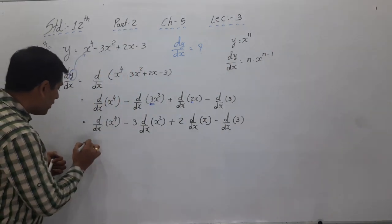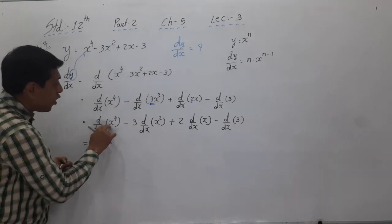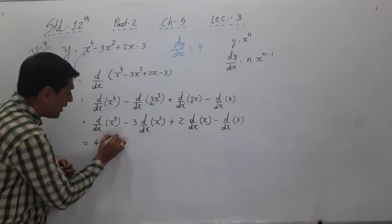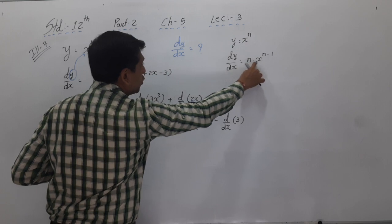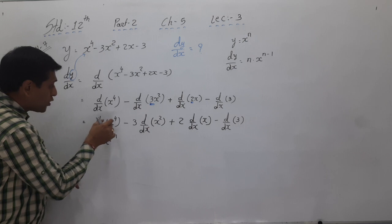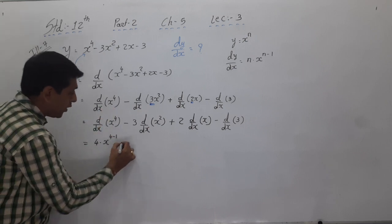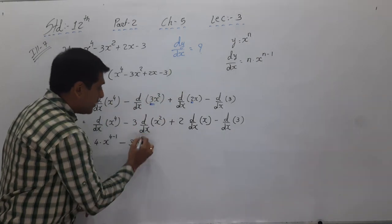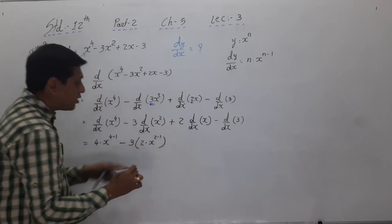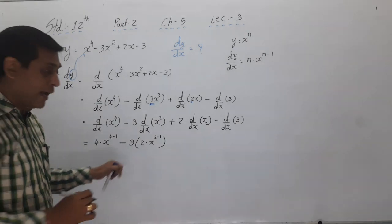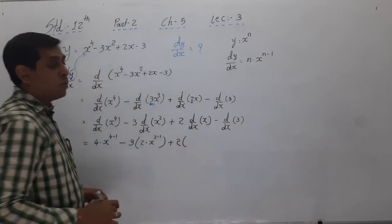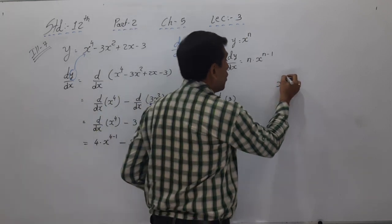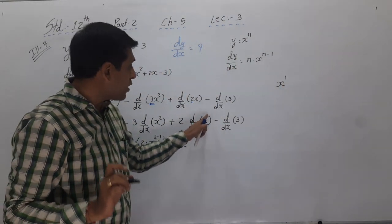One extra formula not in the textbook but important: if y = x, then dy/dx = 1. Write this down in method number 2 alongside the others. Method 2 formulas are: (1) y = xⁿ → dy/dx = n·xⁿ⁻¹, (2) y = constant k → dy/dx = 0, and (3) y = x → dy/dx = 1. So for 2x, x differentiation is 1, so 2 · 1 = 2.